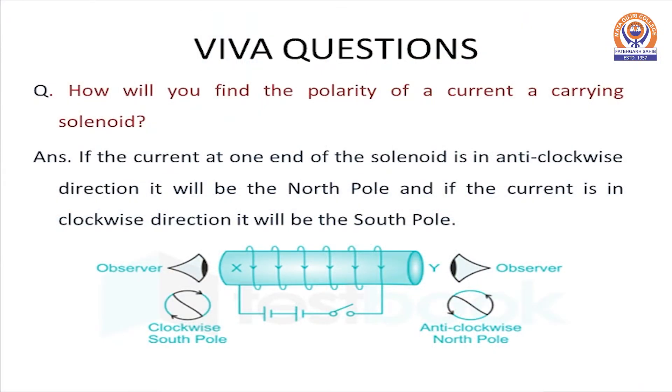Talking about the expected questions. The question that arises in mind is, how do you find the polarity of a current carrying solenoid? So an observer which sees, if current at one end of the solenoid is in anti-clockwise direction, it will be north pole. And if current is in clockwise direction, which observer on other side of the solenoid will see, it will be south pole.